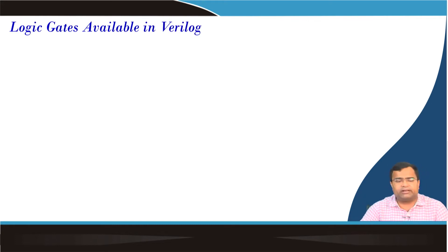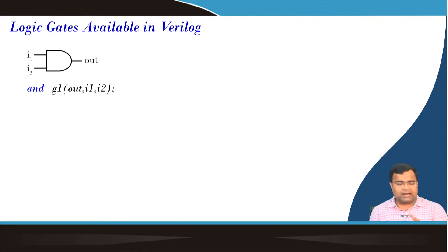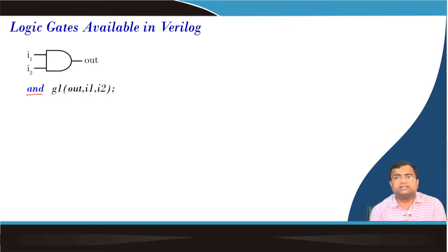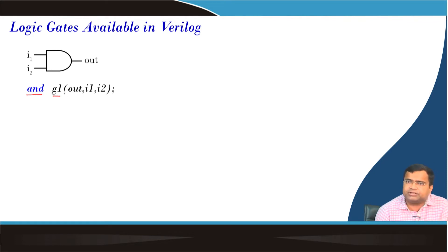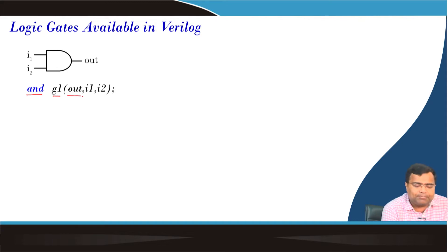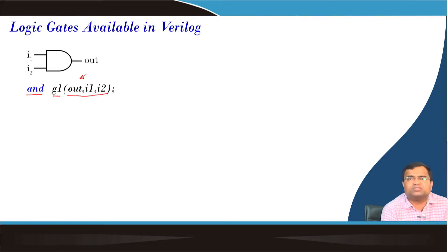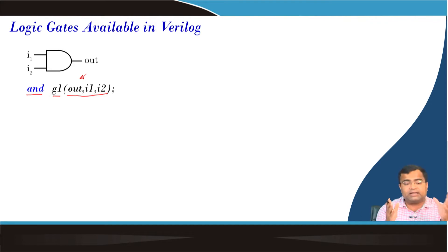The logic gates available in Verilog include AND gate — shown in blue symbols — these are reserved keywords and we should not use them as variable names. 'gate1' is the instance name, which must be different for any other gate being used; all instance names must be different. In the port listing, we should maintain the sequence because these are built-in primitives, so we use OUT first, then I1 and I2.